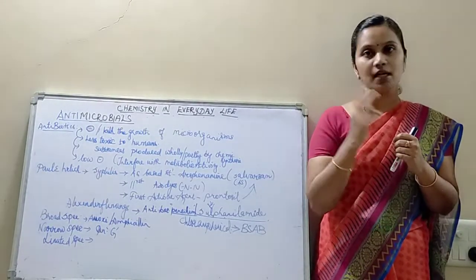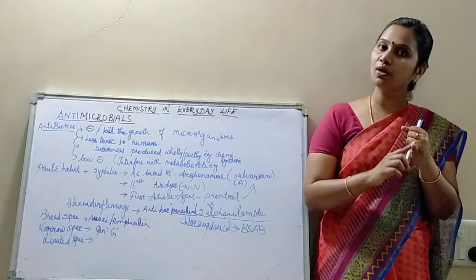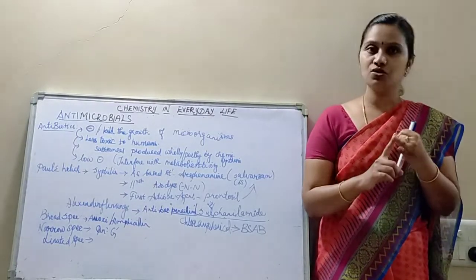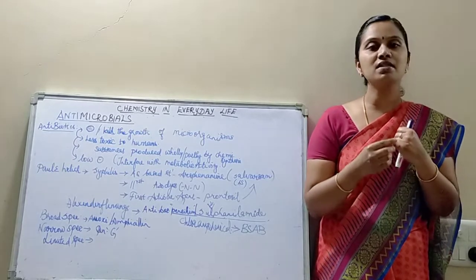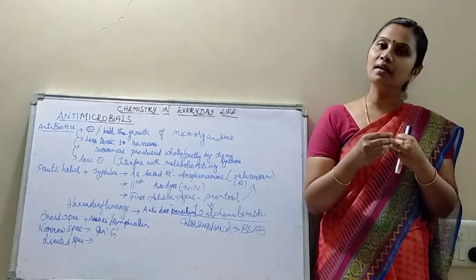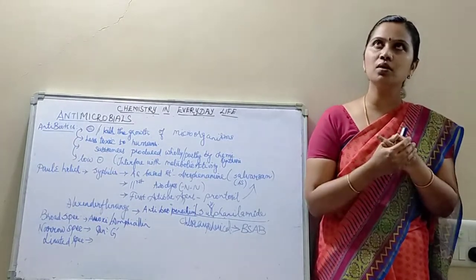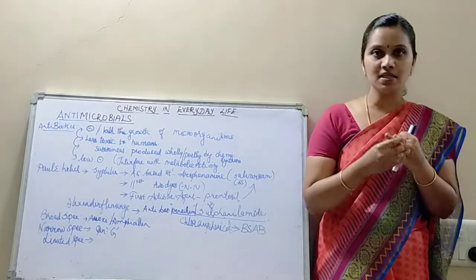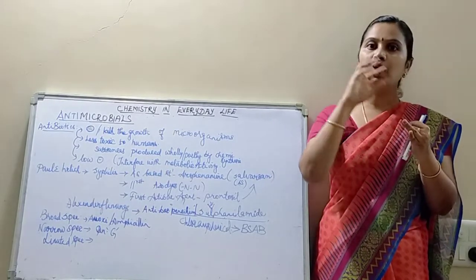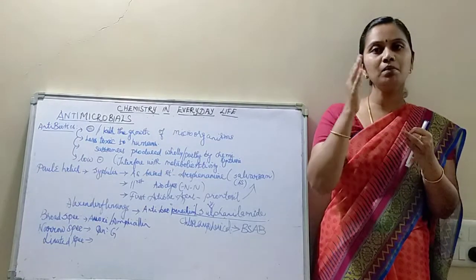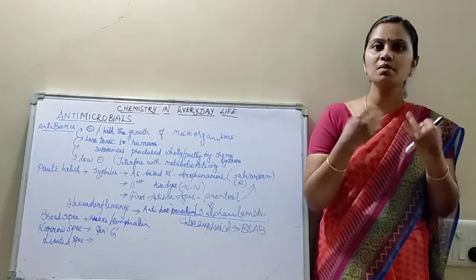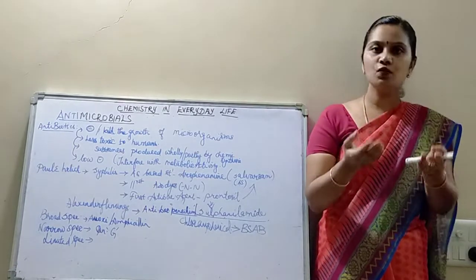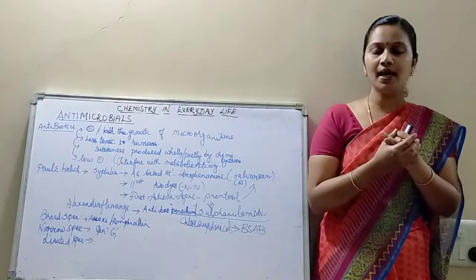Then we saw about two therapeutically important drugs: antacids and antihistamines. Under antacids, we were seeing about symmetry. Under antihistamines, we were seeing about bromopheniramine, antepidine, etc. Antihistamines bind to the receptors of histamine, blocking the action of histamine, because histamine produces an allergic reaction. So we administer antihistamines to get rid of histamine.